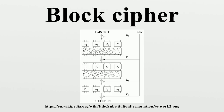The decryption algorithm D is defined to be the inverse function of encryption, i.e., D equals E minus 1. More formally, a block cipher is specified by an encryption function which takes as input a key k of bit length k, called the key size, and a bit string p of length n, called the block size, and returns a string c of n bits. p is called the plaintext, and c is termed the ciphertext.